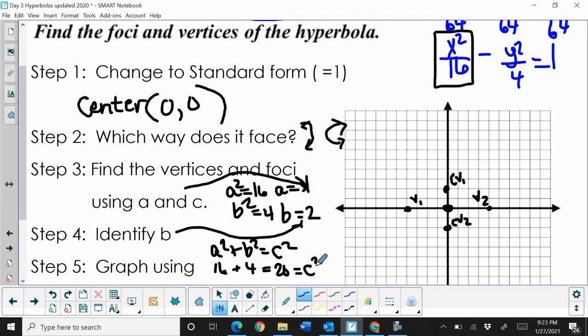That means c equals the square root of 20, which is 2√5. As a decimal, it's approximately 4.5. I'm going to approximate that for sketching. The foci are always on the same axis as the vertices - the transverse axis. From the center, I'll go 1, 2, 3, 4 and a half.